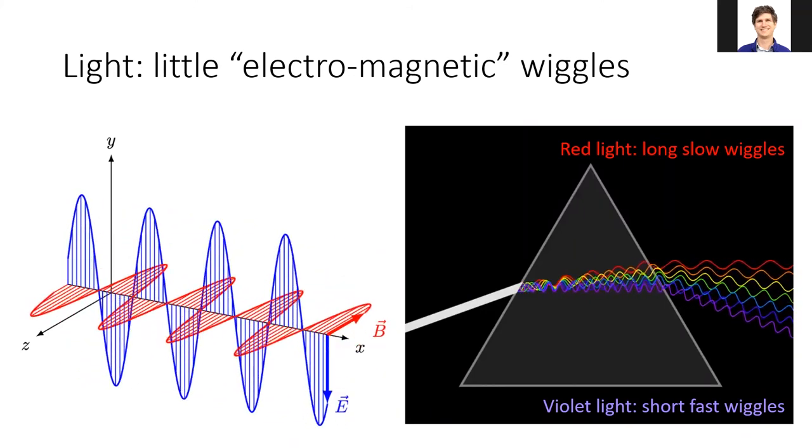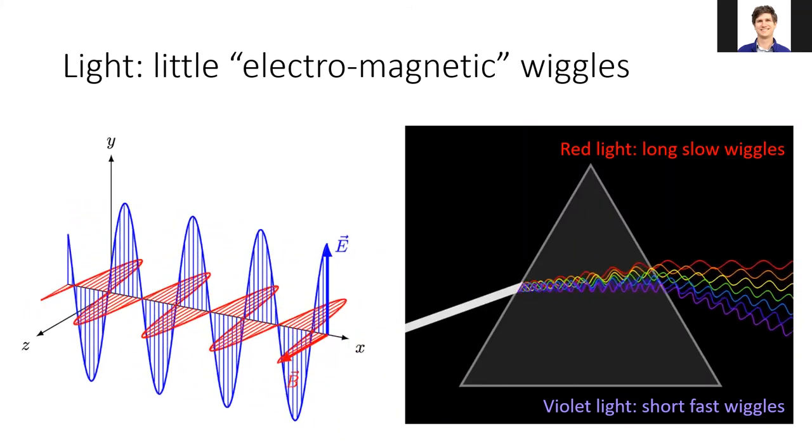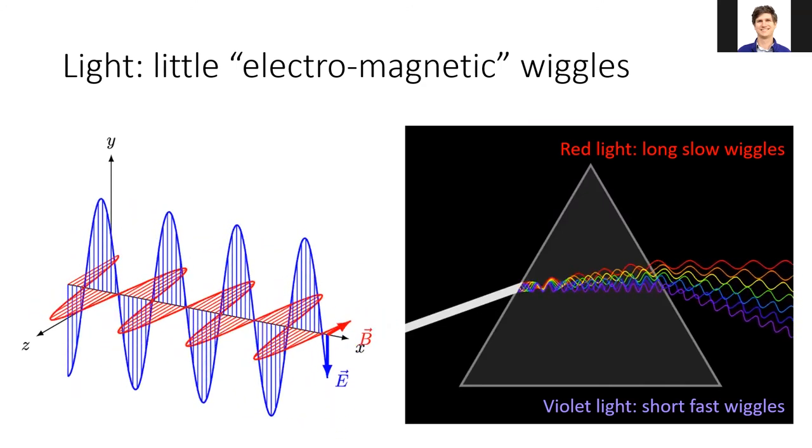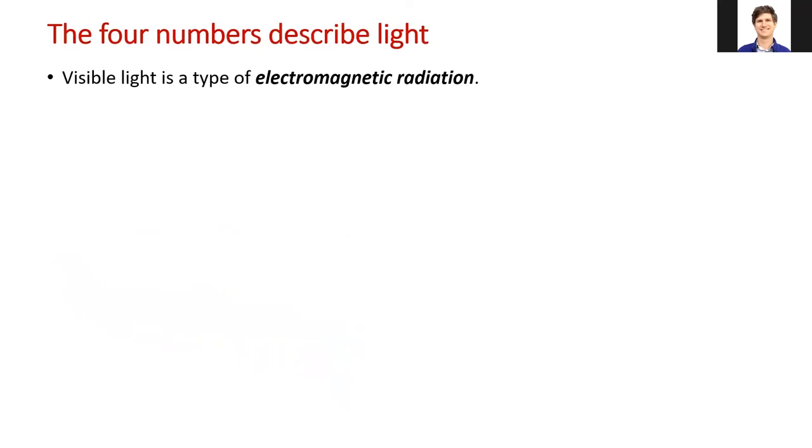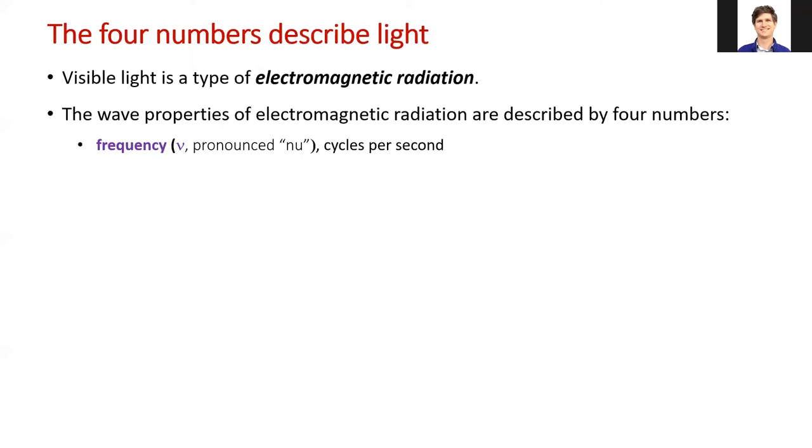But both violet light and red light travel at the same speed. There are four numbers which describe the most important properties of light. The first is frequency, or the number of wiggles per second. We abbreviate it with the Greek letter nu, which looks like a fancy V.